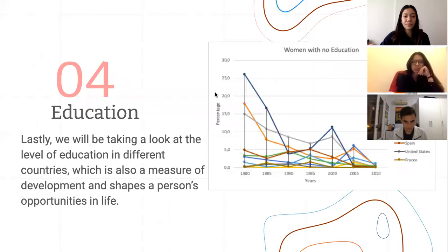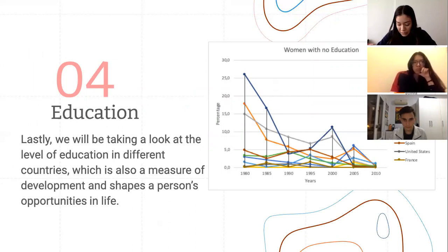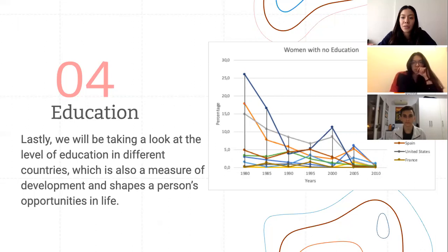Lastly, we want to focus on education. Education is a measure of development that can shape a person's opportunities in life. We decided to pick the indicator of women with no education because we believe gender equality is imperative in terms of education. We believe that empowering women can lead a country to a higher GDP and a decreasing fertility rate, as women will have more opportunities to develop their careers. Additionally, the fifth sustainable development goal from the UN is gender equality. Looking at this chart, the percentage of women with no education has noticeably decreased in every single country throughout the years.